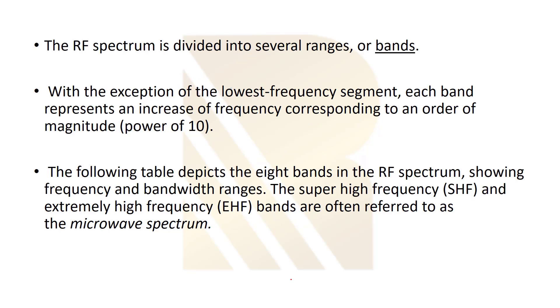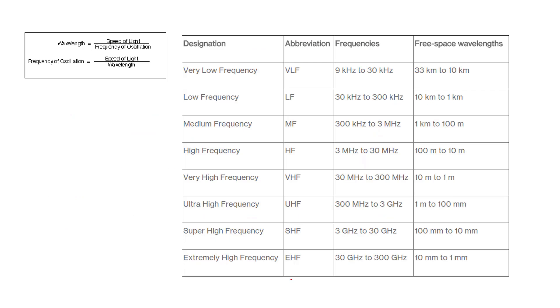The RF spectrum is divided into several ranges or bands. With the exception of the lowest frequency segment, each band represents an increase of frequency corresponding to an order of magnitude. So we can show this with this table as you see here. It starts from very low frequency, as you see, 9 kHz, going to very high frequency, 300 GHz.